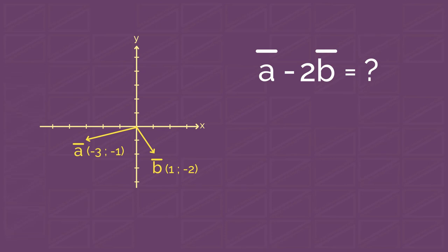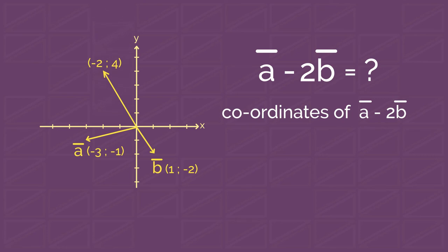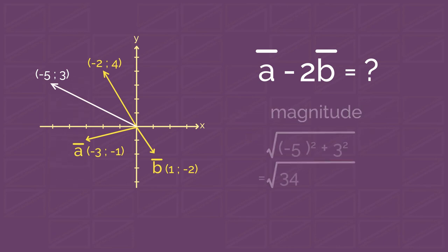We can analyze it even without drawing, as it's one of the features of vectors we already know. First, we find the coordinates of vector (-2B). Then, the coordinates of vector (A-2B). And finally, the magnitude of this vector.